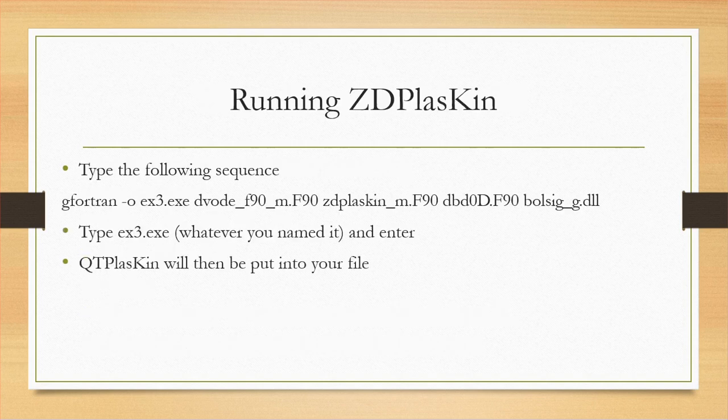Once everything is in that file, you can go ahead and run it. Type the following: gfortran -o, then name it — in my case I'm using ex3.exe — then devode-f90-m.f90, zdplaskin-m.f90, dbd0d.f90, and bolsig-g.dll, then hit enter. The user code will read the data in file, so you won't need to use that separately here. The ex3.exe application you made will now appear in your folder, and to open it, enter ex3.exe into your command prompt. This will create all of your QDPlaskin text files right into your folder.